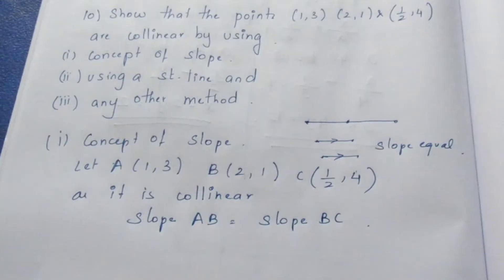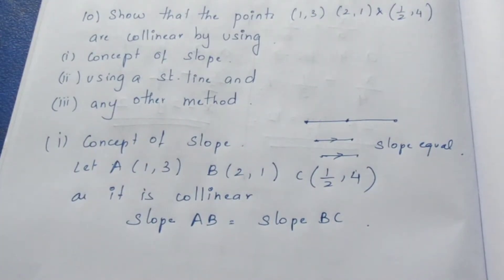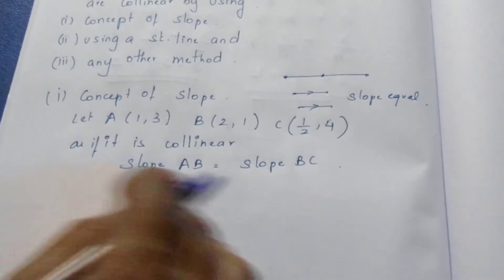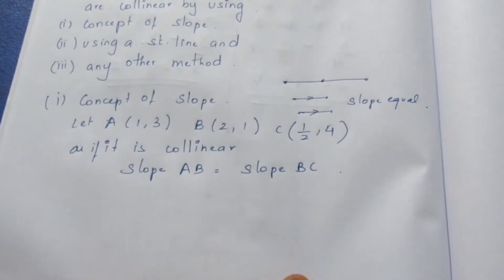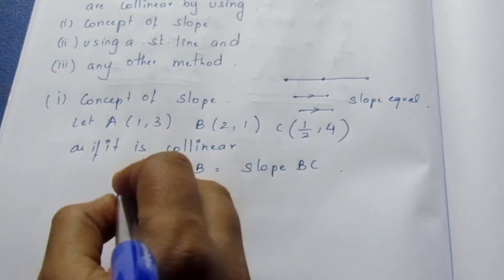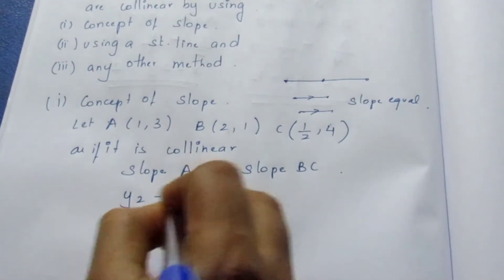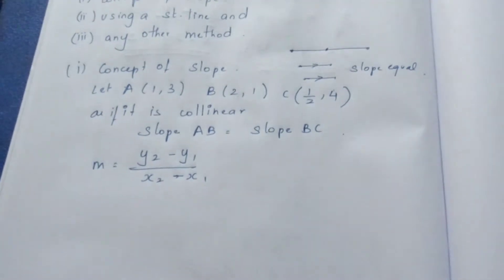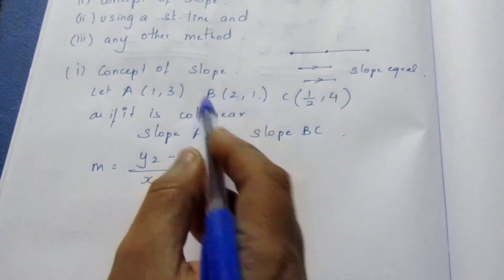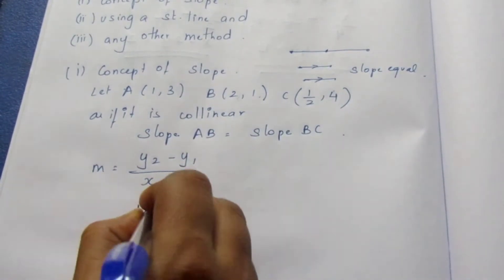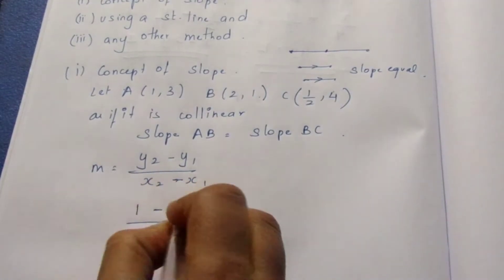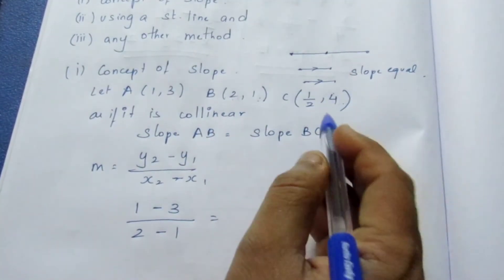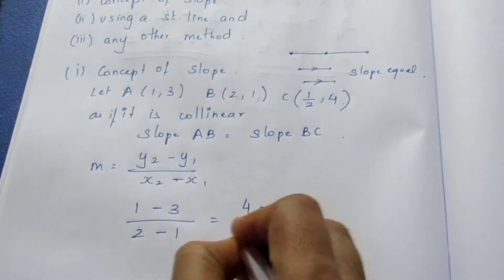If it is collinear, the slopes will be equal. The slope formula is: slope = (y2 − y1) / (x2 − x1). Using this formula with coordinates x1, y1 and x2, y2, we substitute: (1 − 3) / (2 − 1) equals (4 − 1) / (1/2 − 2).